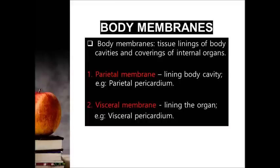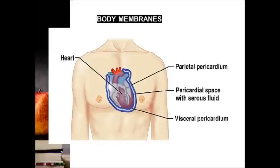How about terminologies for body membranes? Don't worry — it is super easy. When the membrane lines the body cavity, the term is parietal membrane. When it lines the organs, the term is visceral membrane. For example, pericardium is the name of the membrane that lines the heart. When it lines the pericardial cavity, the terminology is parietal pericardium. But when the membrane lines the organ — the heart — the terminology is visceral pericardium. The space between parietal and visceral membranes is called pericardial space.